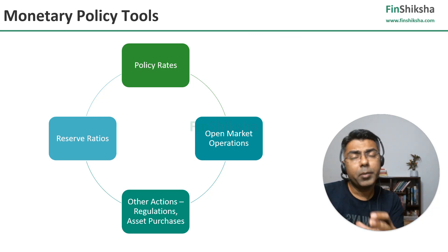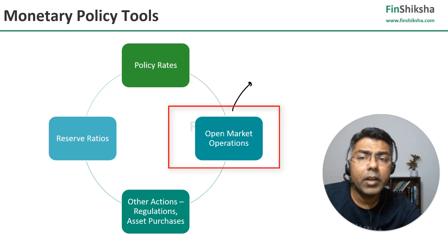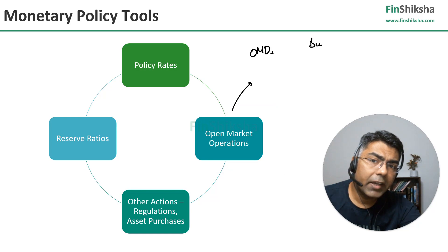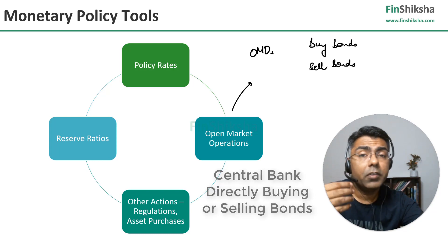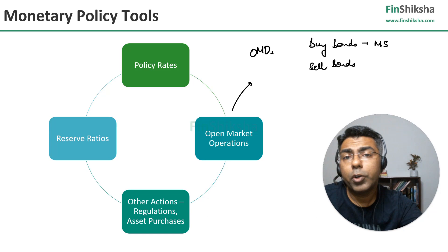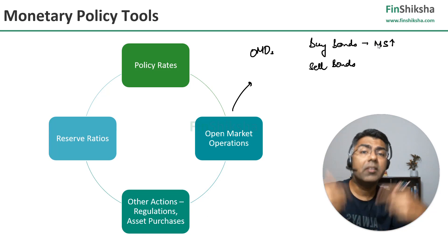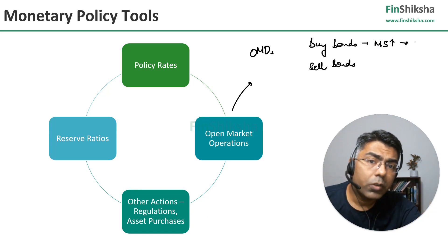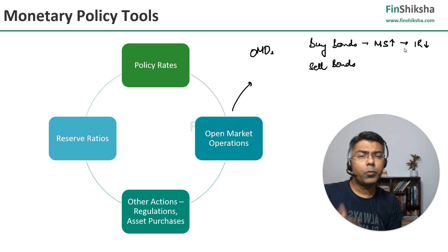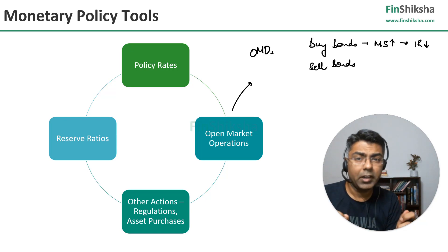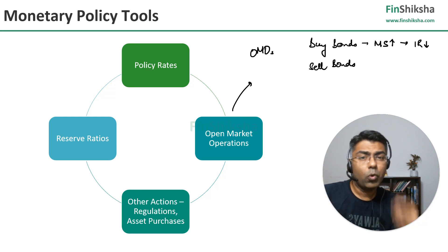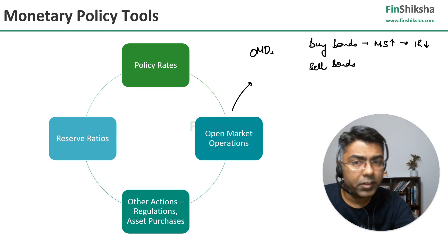The third tool is open market operations, or OMOs. In OMOs, the central bank is basically directly buying or selling bonds. If the central bank buys bonds, they push liquidity into the system, which means money supply goes up and interest rates come down. When you buy a bond, the bond price goes up — and we know that bond prices and yields are inversely related. So when bond prices go up, yields come down, and that's effectively interest rates coming down.